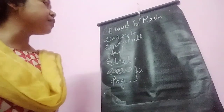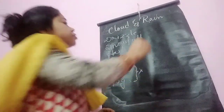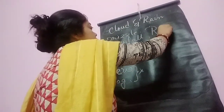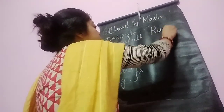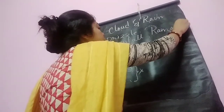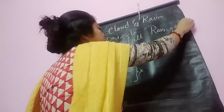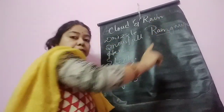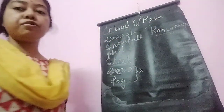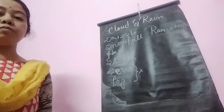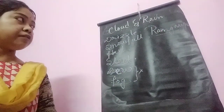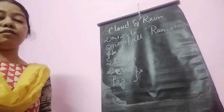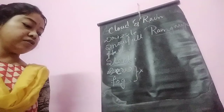Last part: which instrument is used to measure rainfall? That is the rain gauge. Only the name is enough — rainfall is measured by rain gauge.